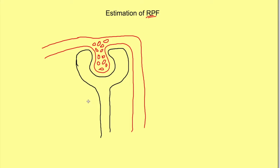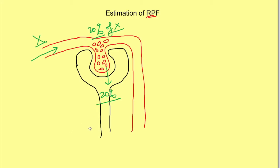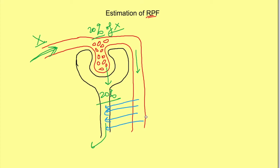For renal plasma flow estimation, we want a substance that is also secreted. Approximately 20% of renal plasma flow is getting filtered. If a substance is freely filtered, 20% of it will get into the tubules. If only this filtered portion is cleared, we get an estimate of GFR, not renal plasma flow. We want all plasma entering the renal tubules to be cleared of the substance, which is achieved by active secretion, so the entire plasma containing the substance gets cleared — giving an estimation of renal plasma flow.